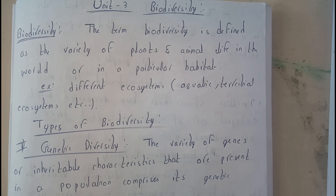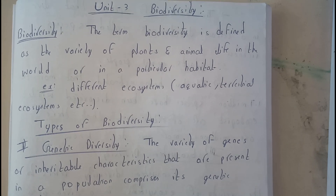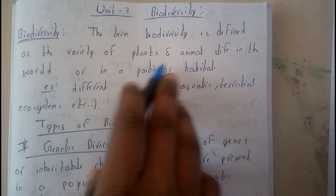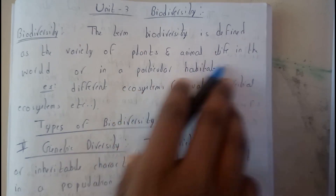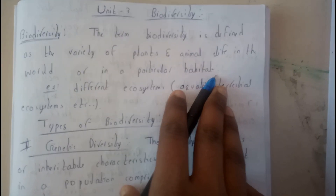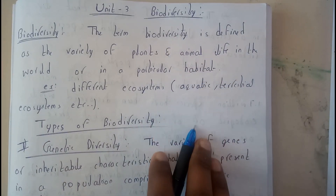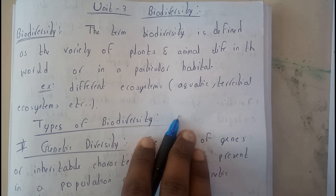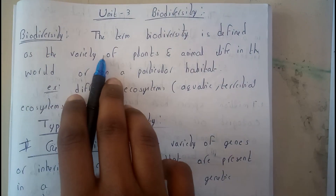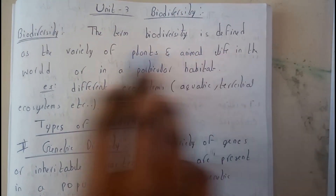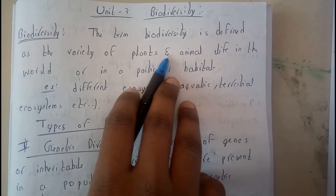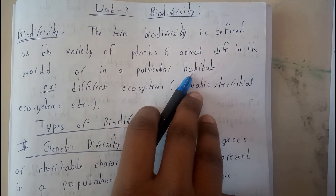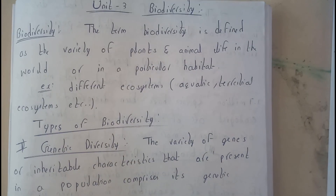Basically, the term Biodiversity is defined as the variety of plants and animal life in the world or in a particular habitat. It is called Biodiversity.